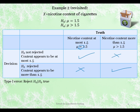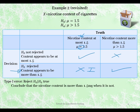Type 1 error — just a reminder — is that we reject the null given that the null is true. We're conditioning on the fact that the null is true. In the cigarette example, that means we're saying there is more than 1.5 milligrams of nicotine in the cigarette, but actually that is not the case. So we've made an error.